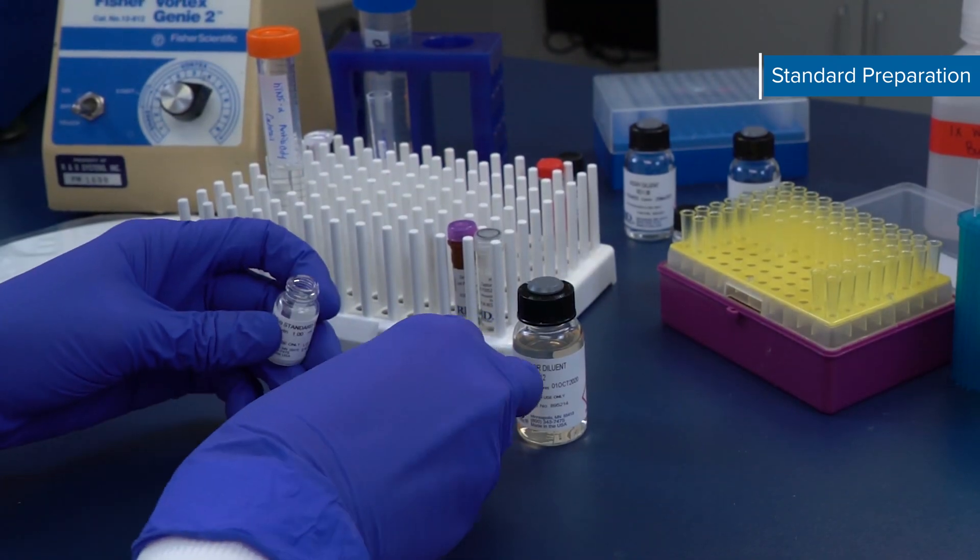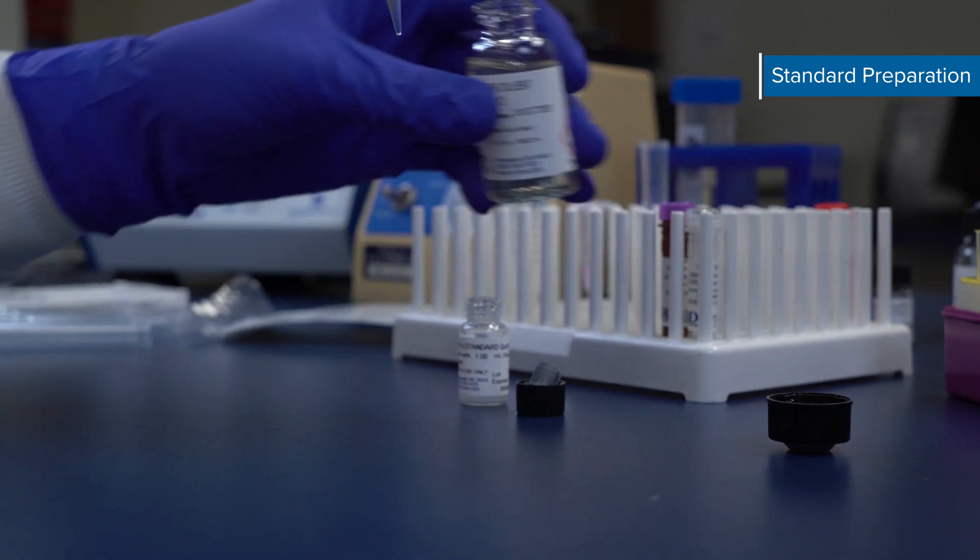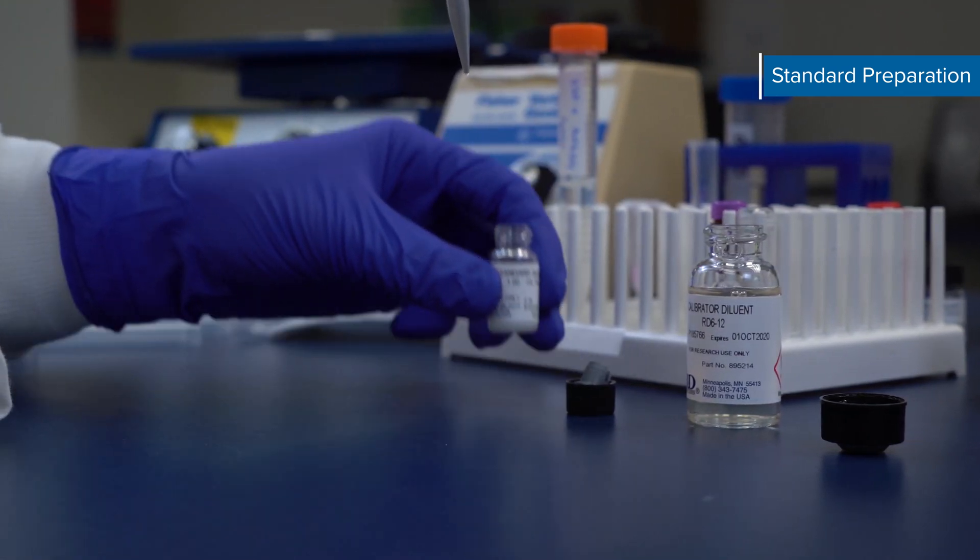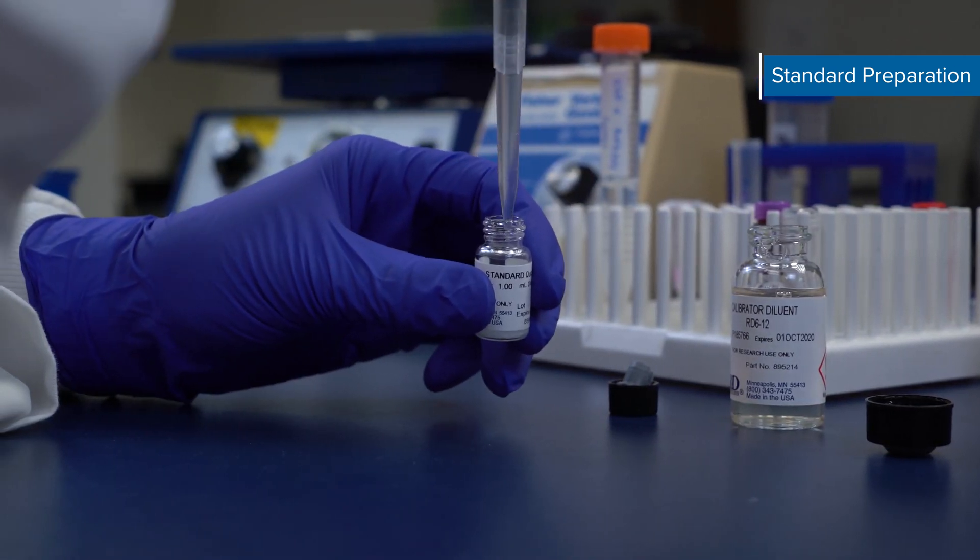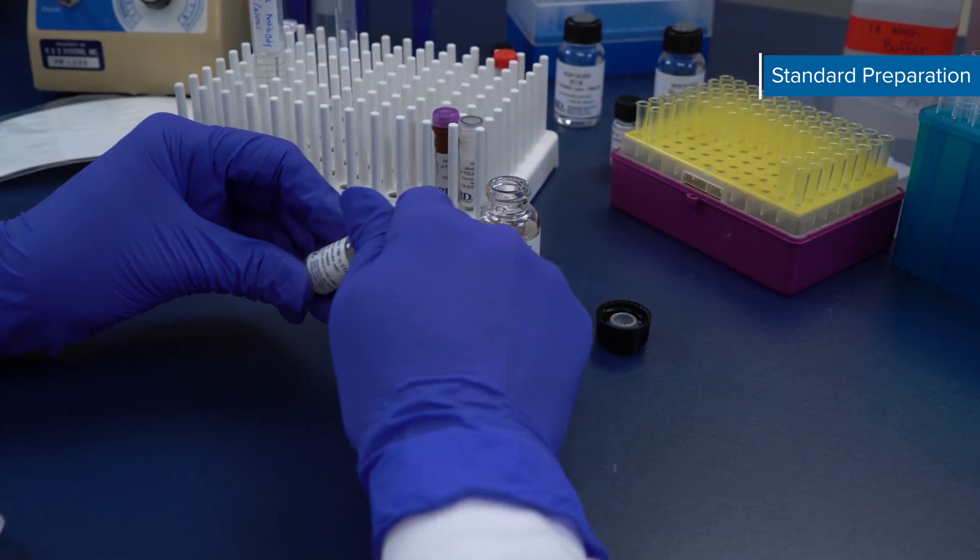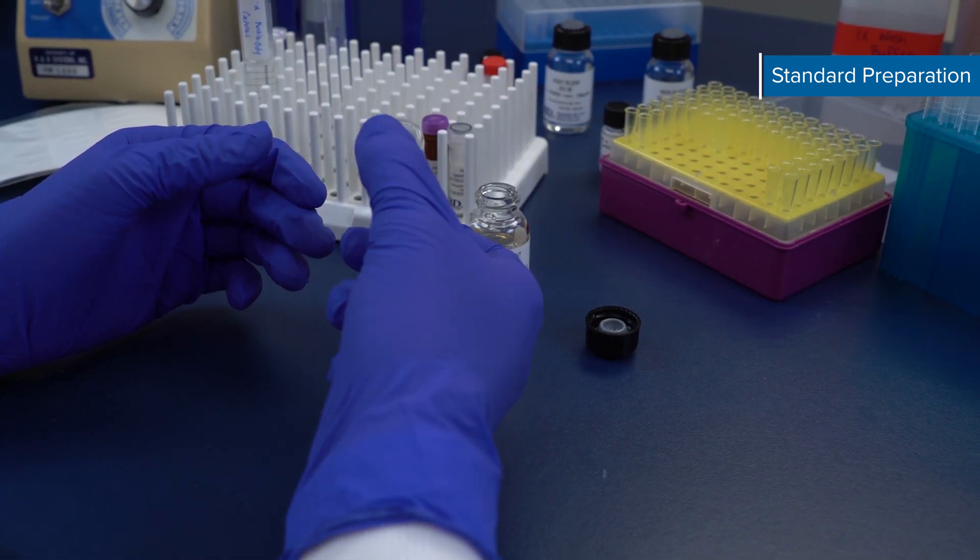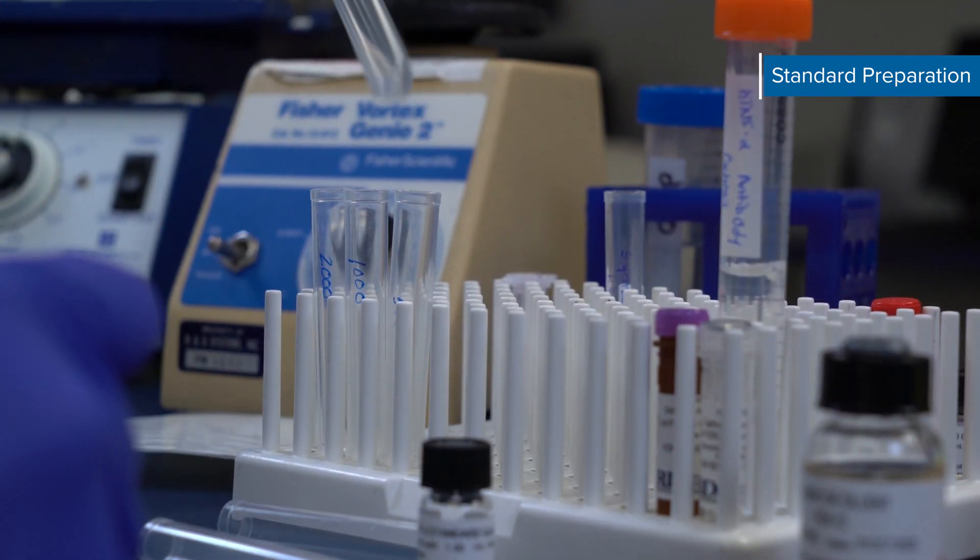Next, prepare your human TNF-alpha standard. Refer to the vial's label for specific reconstitution volume. Reconstitute according to the kit booklet. This reconstitution produces a stock solution of 20 ng per mL. Gently mix the standard to ensure complete reconstitution and let rest for a minimum of 15 minutes prior to making dilutions.